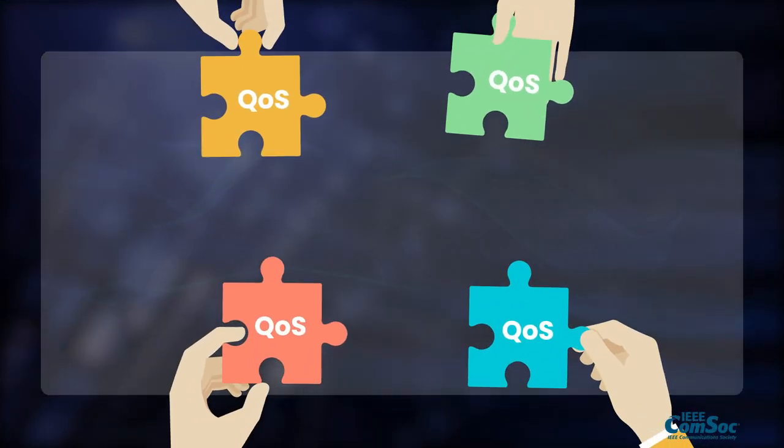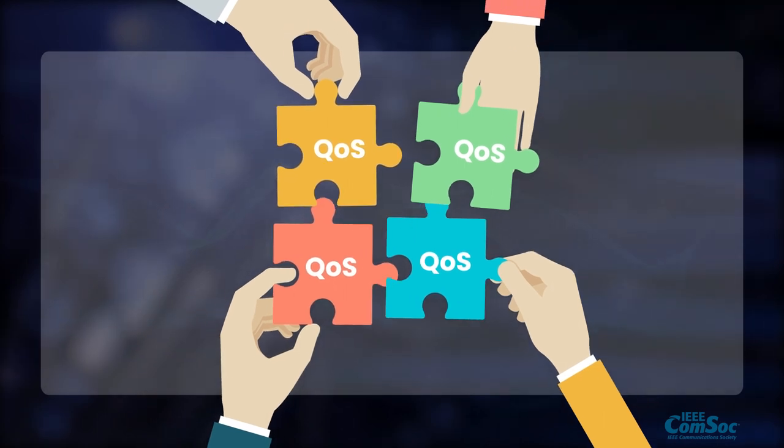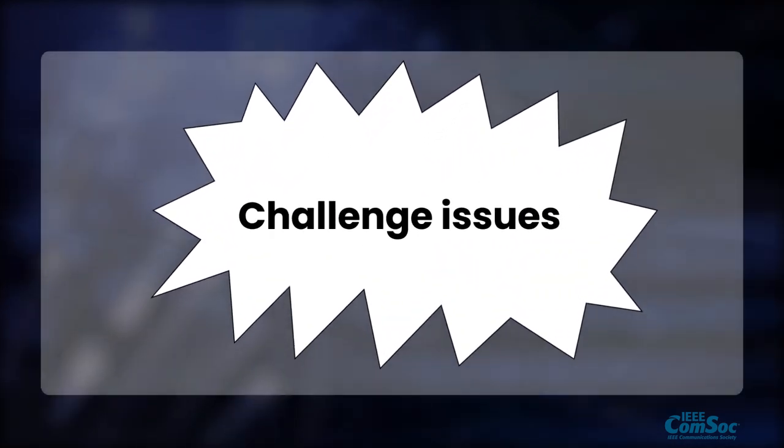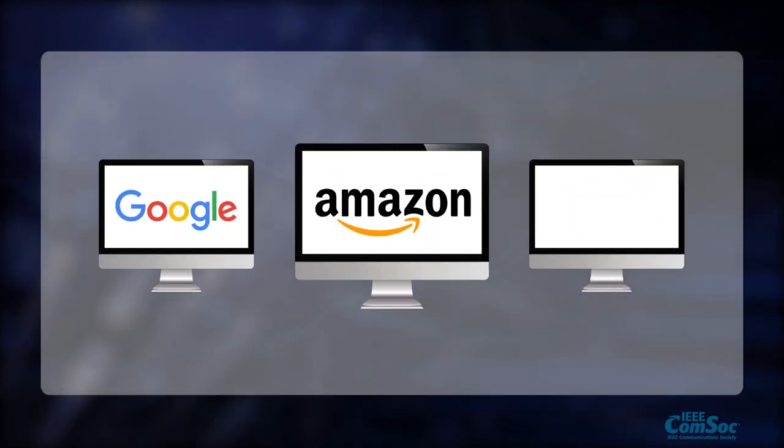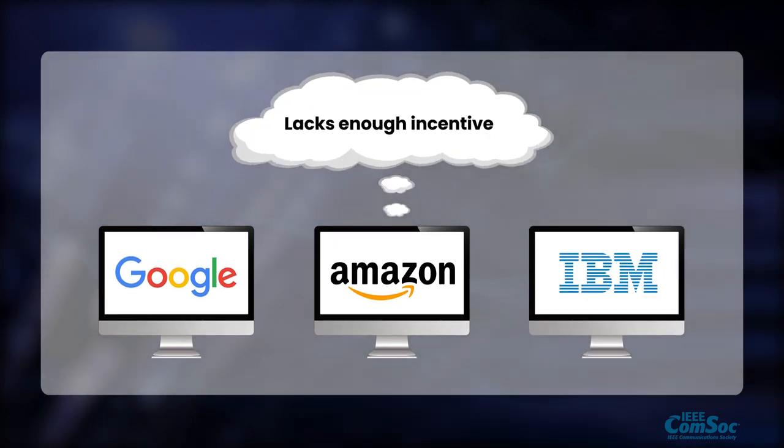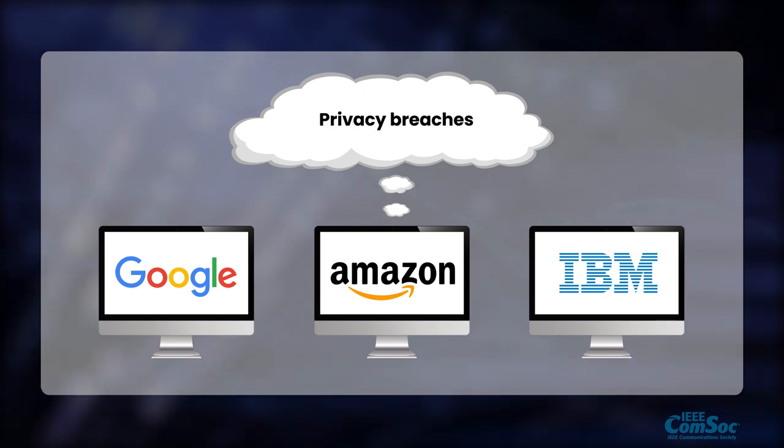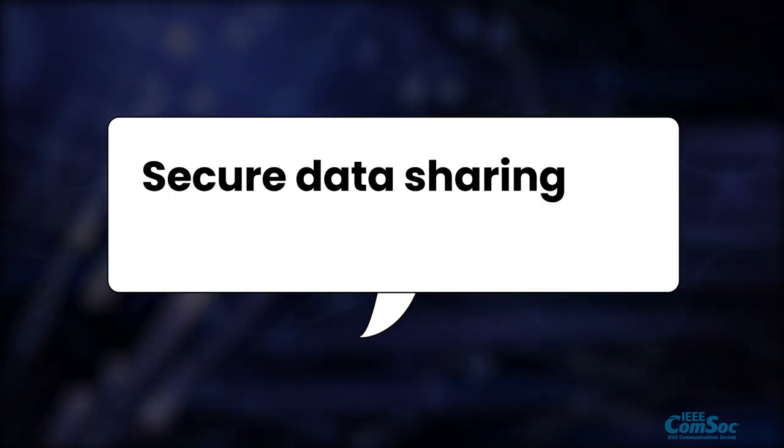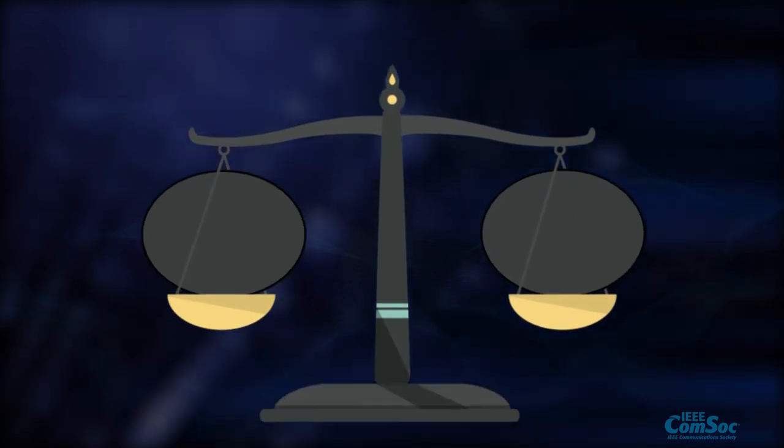During the above cross-platform QoS data integration process, there are often two challenging issues. First, each of the three platforms Google, Amazon, and IBM lacks enough incentive to release its QoS data to the recommender system due to possible privacy breaches. In other words, a secure QoS data sharing mechanism is absent.